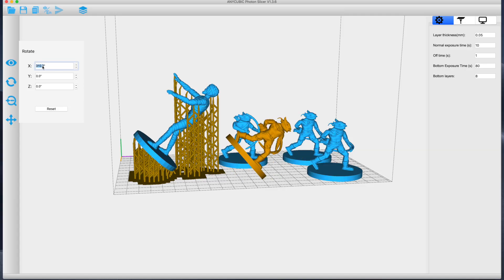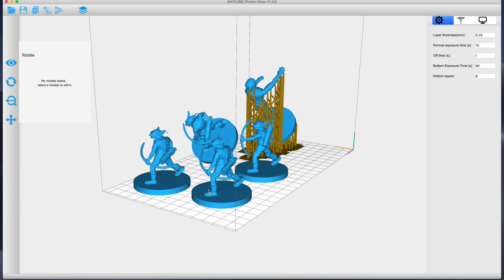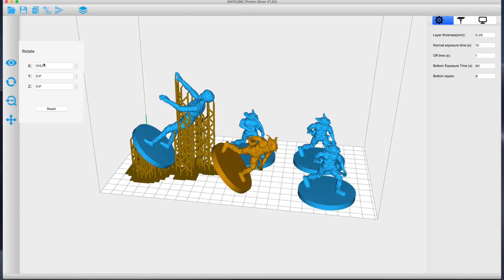The Photon S comes with a software package to slice your 3D models into printer instructions. This is a fairly basic tool but it does just about get the job done. It lets you add supports and configure basic settings such as your layer height and exposure time but it is a very basic tool.